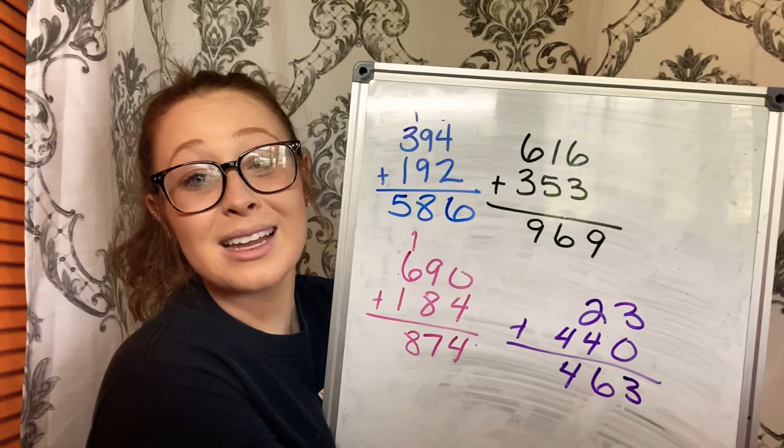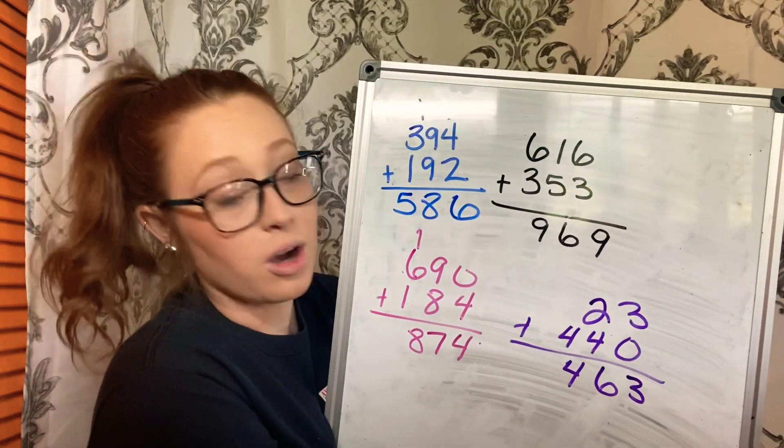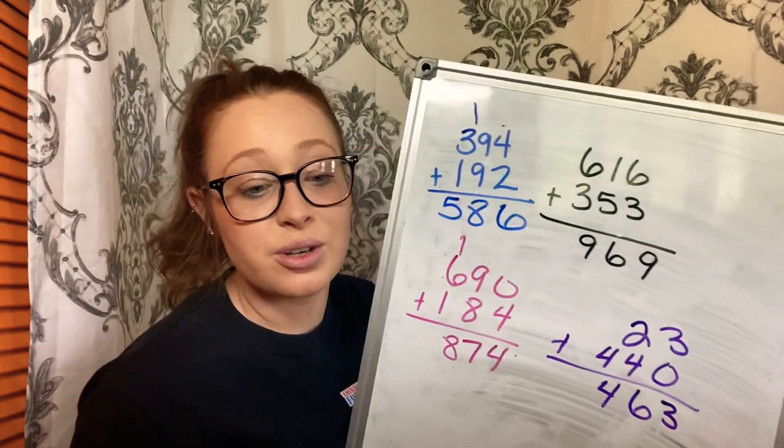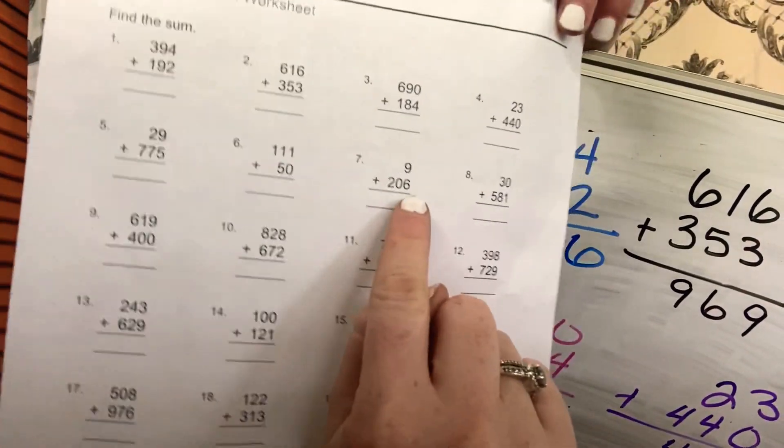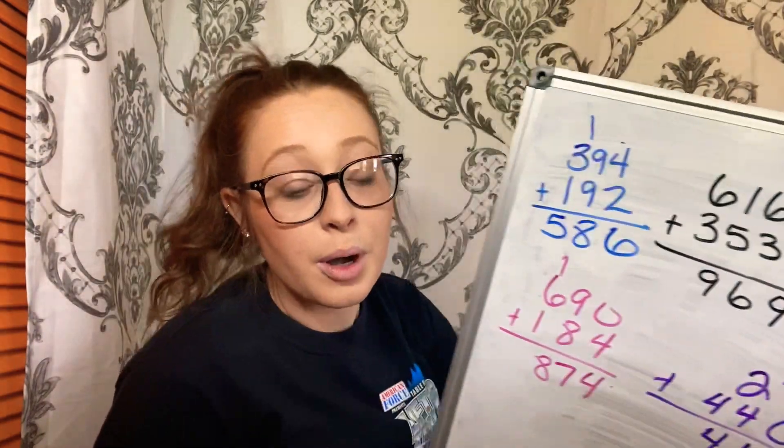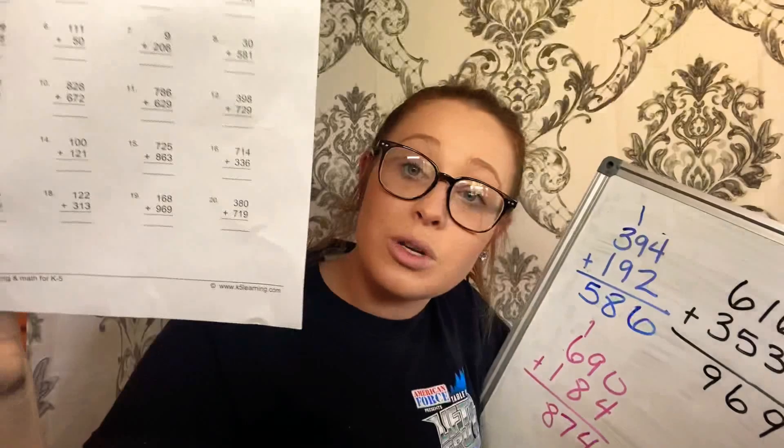So, you just got to pay attention to how the numbers are set up on your paper, because there is some, just like this one right here, there's only one number at the top, so that means you're only going to be adding that one number. But, you got to look to see if you're going to be carrying it. So, guys, this is what you're doing. This is for days 18 and 19. I hope you have a great weekend.